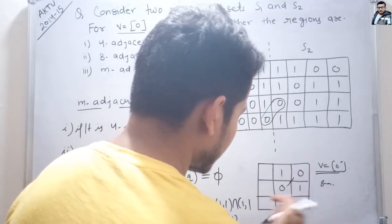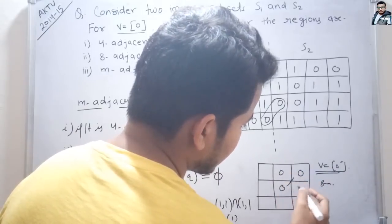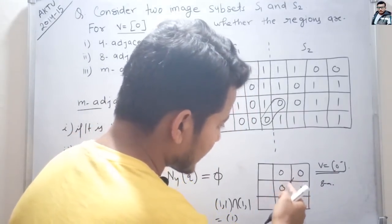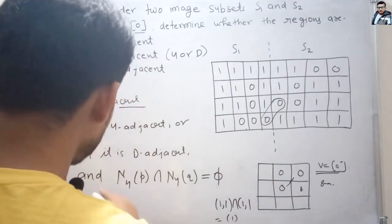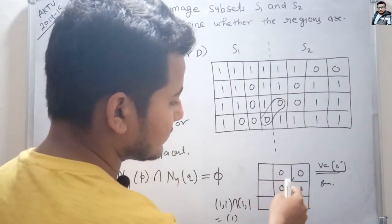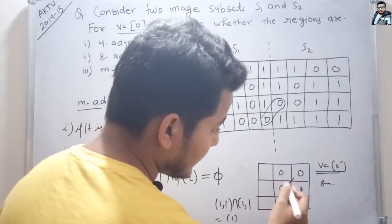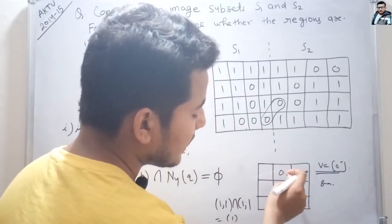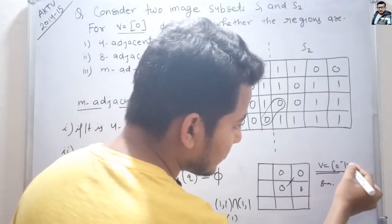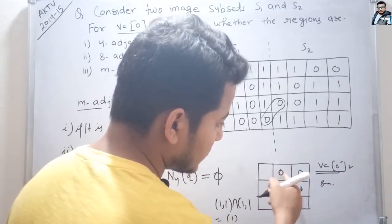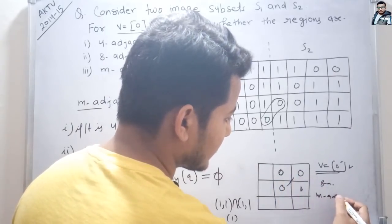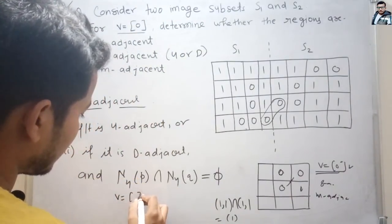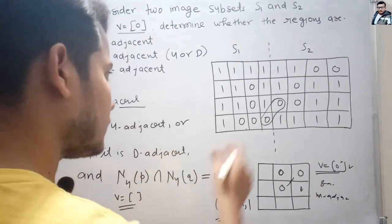The intersection gives element 1, but we do not consider it because V equals 0, so this pixel is also M-adjacent. However, if one element were 0 and this were 1, we check the 4-adjacent neighbors: if a neighbor pixel is also 0 and is 4-adjacent to both pixels, then it would not be M-adjacent. We have to consider the value of V when checking M-adjacency.